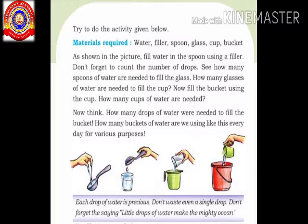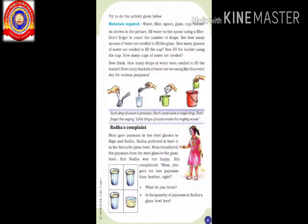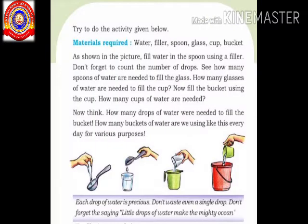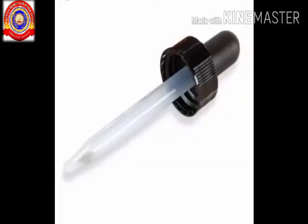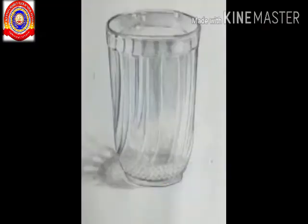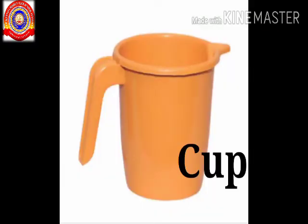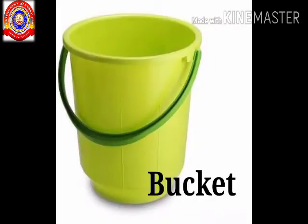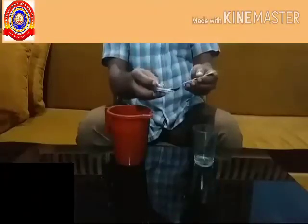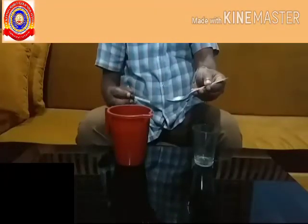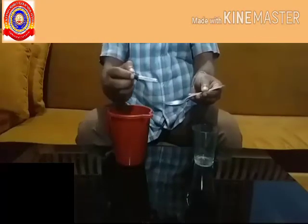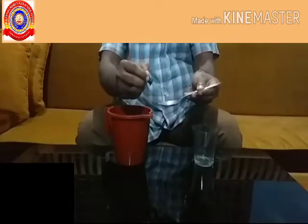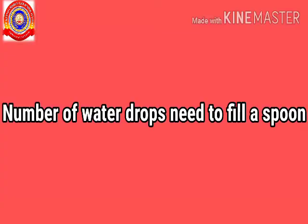The activity is given in your textbook on page number 41. The things needed are: a water filler, spoon, glass, cup, and a bucket. First, we have to fill water in the spoon using a filler, and count the number of water drops needed to fill the spoon.